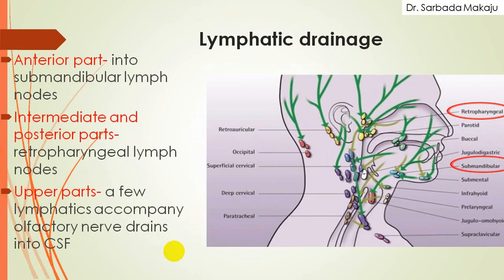Now the lymphatic drainage. The anterior part drains into the submandibular lymph nodes. The anterior and posterior parts drain into the retropharyngeal lymph nodes. The upper parts are accompanied by a few lymphatics accompanying the olfactory nerves and drain into the CSF.